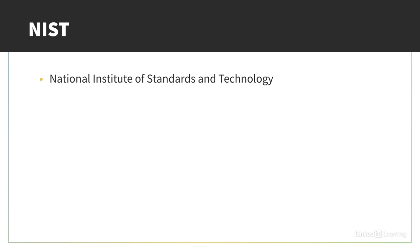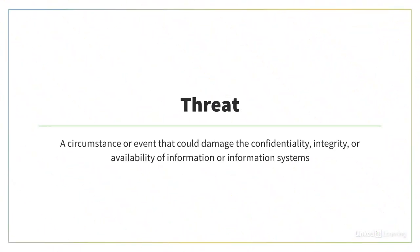We can turn to NIST, the National Institute of Standards and Technology, to help us better understand that difference. NIST considers a threat to be a circumstance or event that could damage the confidentiality, integrity, or availability of information or information systems. That means if something or someone could expose an organization's secret information — like intellectual property or customer personal information — or could make changes without proper approvals, or take a web application offline, then that's a threat.